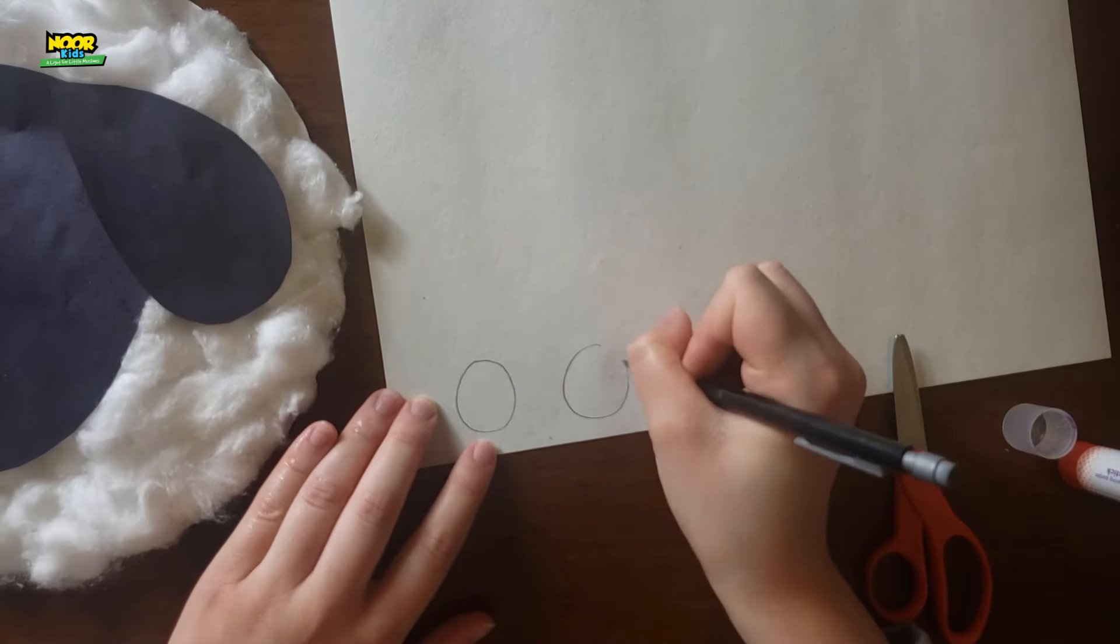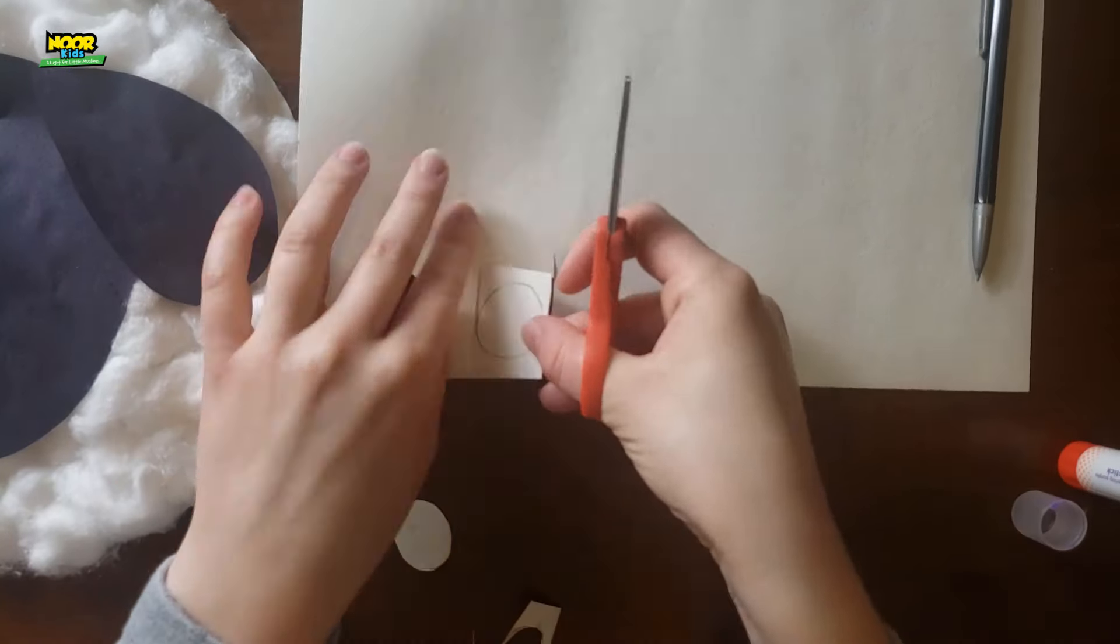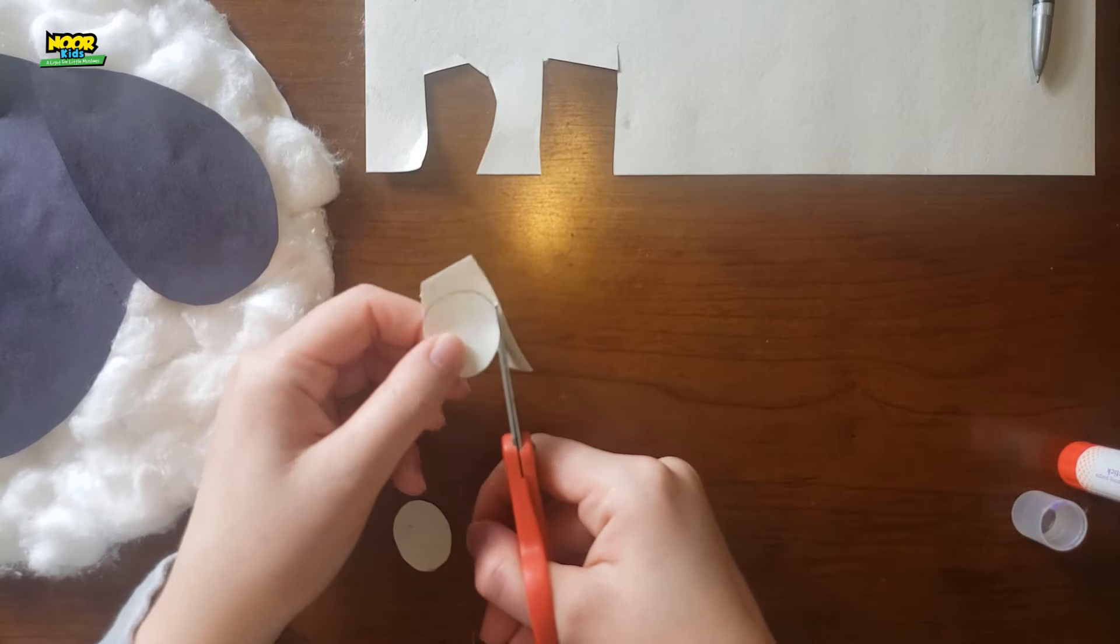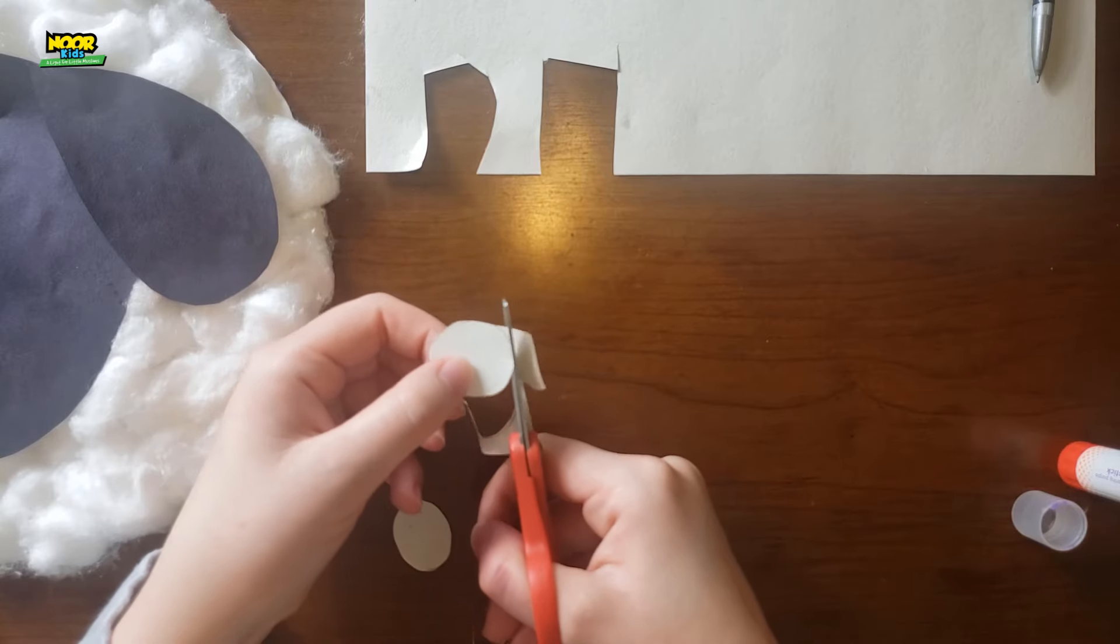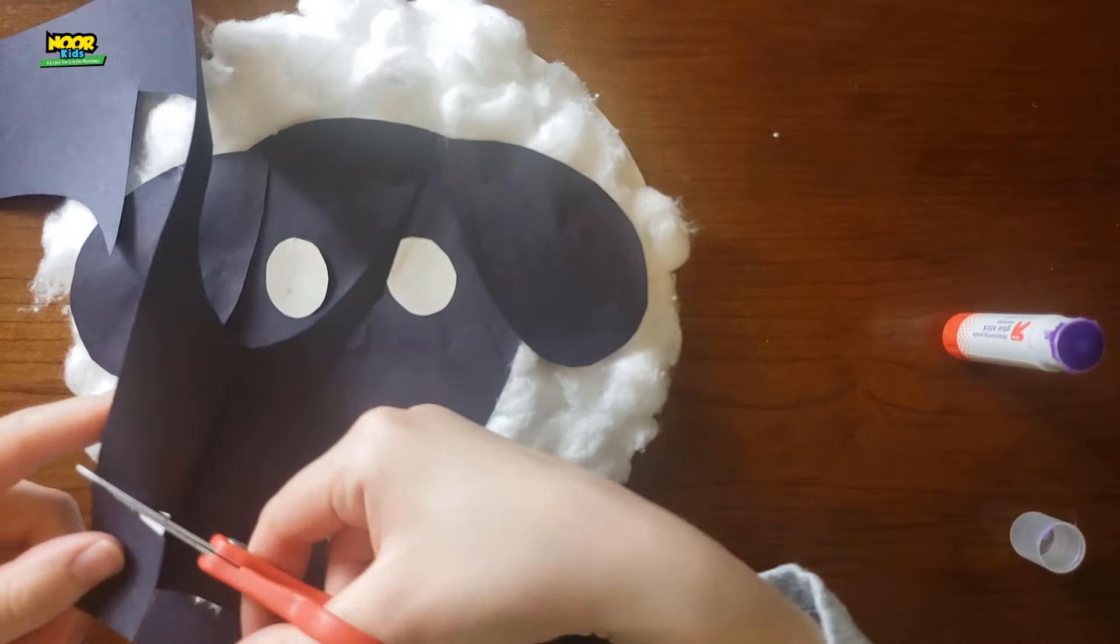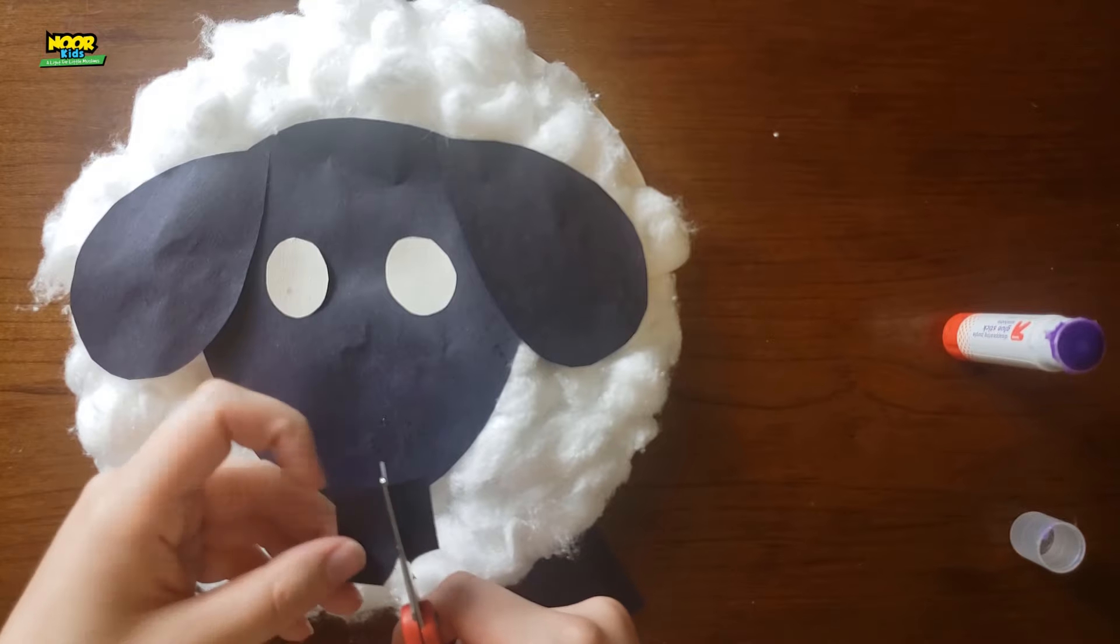Next you're going to get that white sheet of paper and you're going to cut two small circles. It's actually helpful to cut a big square around the circle before you cut out the little circle itself. Glue them onto the sheep head. Then cut out even smaller black circles. Glue them to your sheep's face to make its eyes.